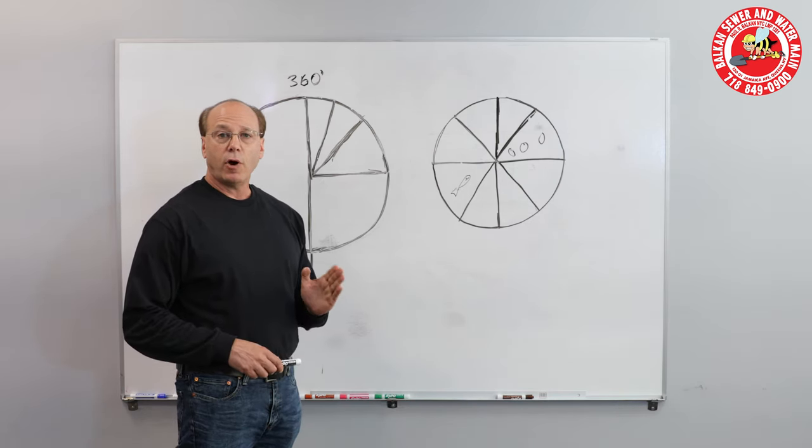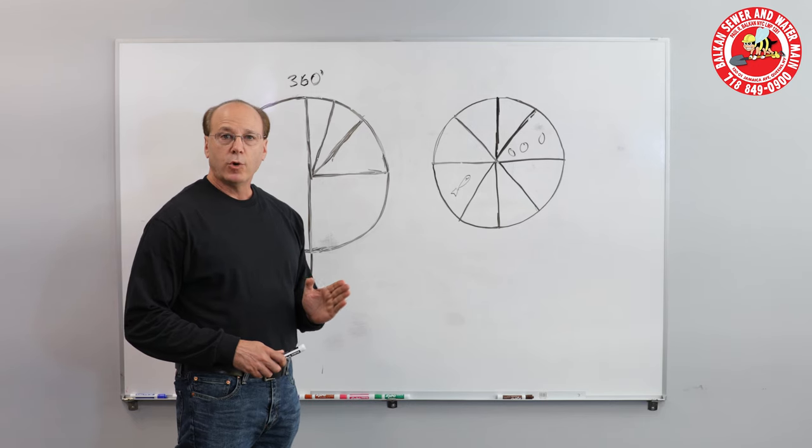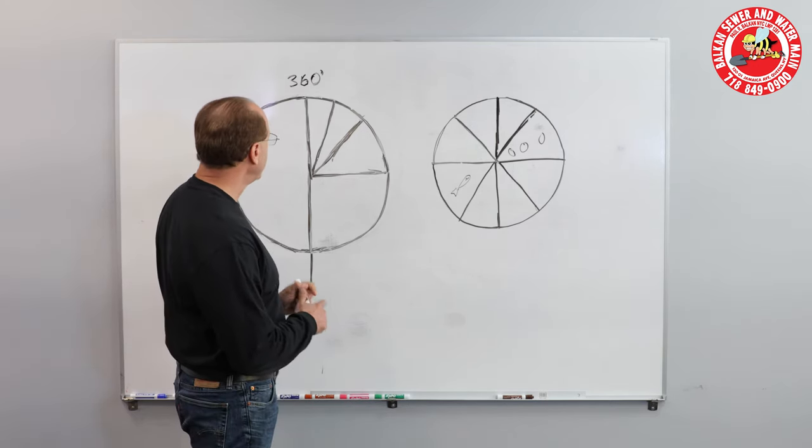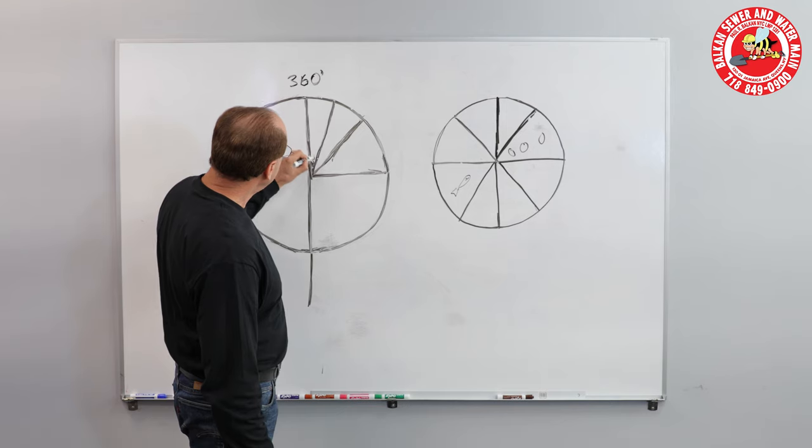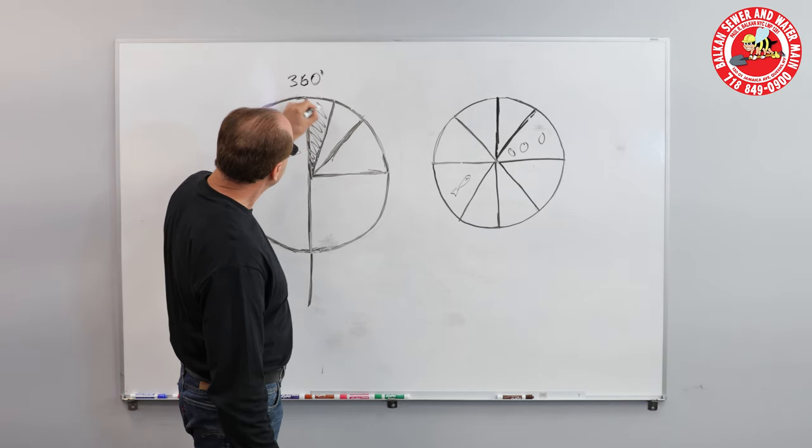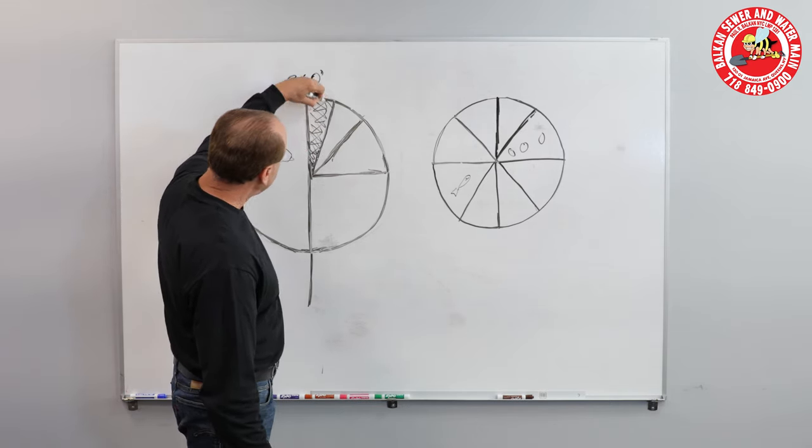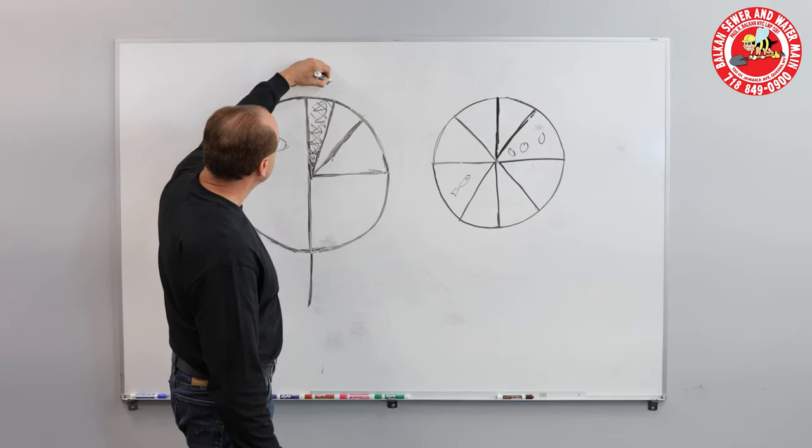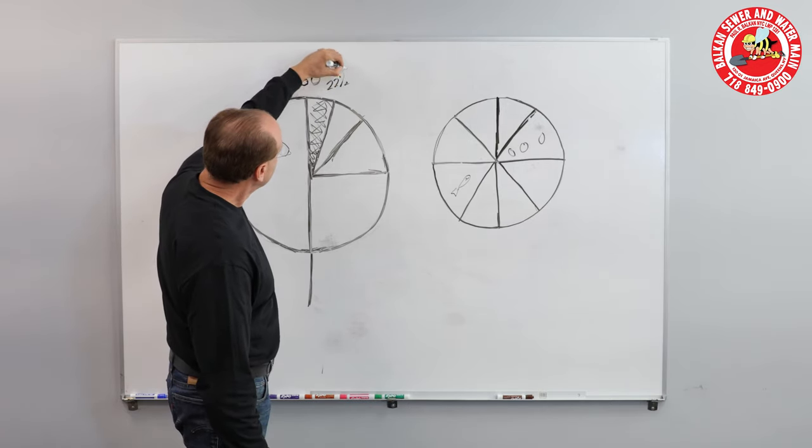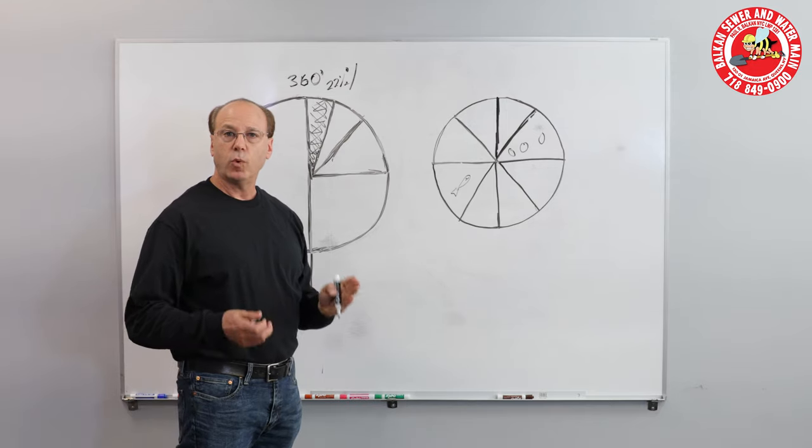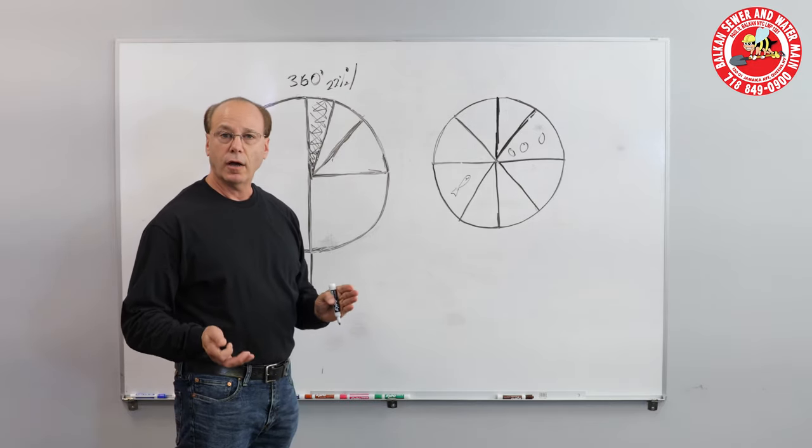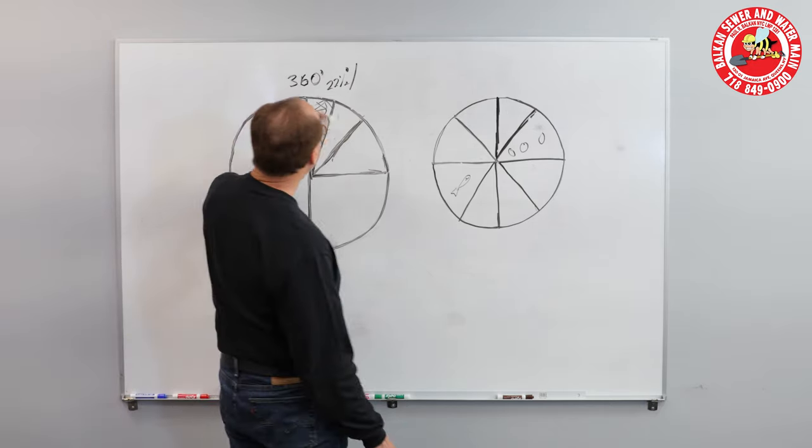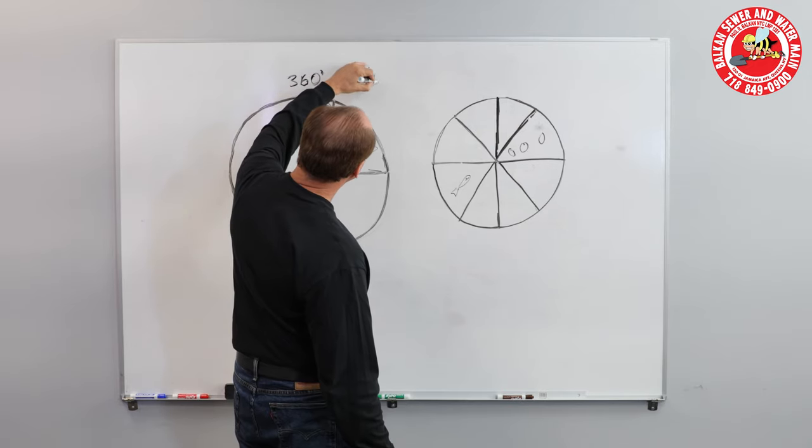Now there are bends that are called 22 and a half degree bends. What's that? Well, that's a half of a slice of pie. That's a 22 and a half degree bend. What do we also call that? Because it's one-sixteenth of a circle, we would call it a sixteenth bend.